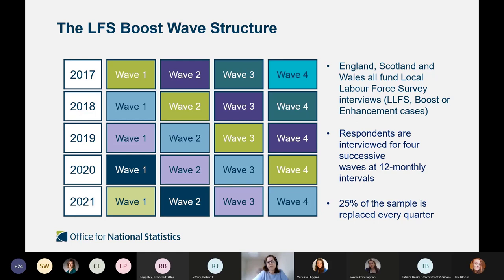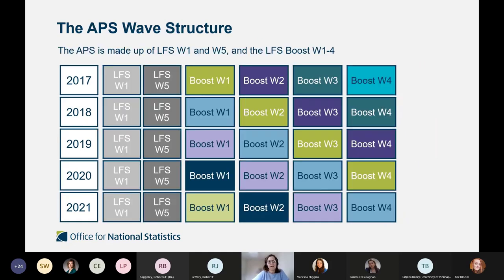Respondents of the boost are contacted in four waves in 12-monthly intervals, replenishing 25% of the sample every quarter. In any given year — say 2017 — you have a cohort from each wave, similar to the LFS. The APS combines specifically wave one and wave five cohorts in any given year, plus all waves of the boost cases, giving a bigger sample for analysis at lower geographic level.